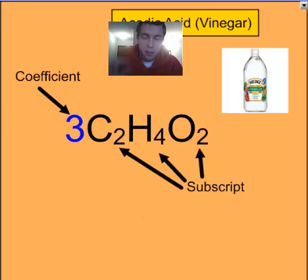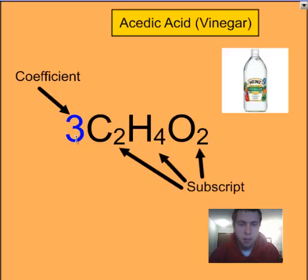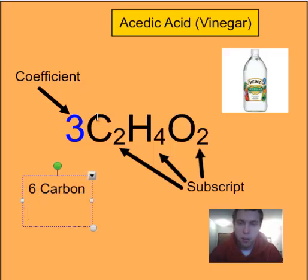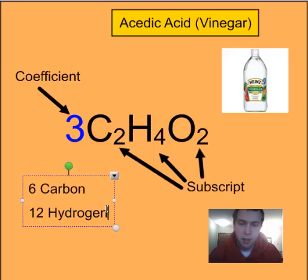We have acetic acid, which is vinegar. We have 3 subscripts this time: 2 for carbon, 4 for hydrogen, and 2 for oxygen. Now we have a coefficient of 3. We can do the same thing and distribute that 3 to all 3 types. So we'd have 3 times 2, giving us 6 carbon; 3 times 4, giving us 12 hydrogen; and 3 times 2 for oxygen, giving us 6 oxygen.